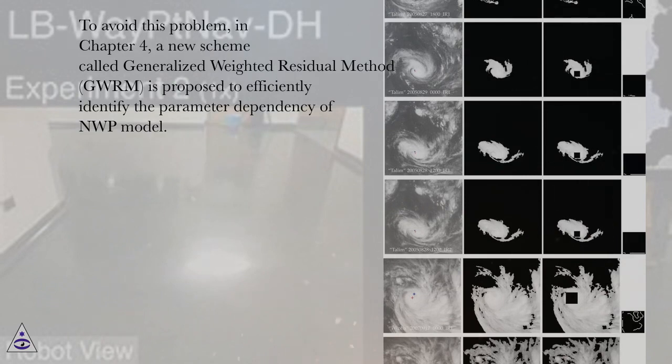To avoid this problem, in Chapter 4, a new scheme called Generalized Weighted Residual Method, GWRM, is proposed to efficiently identify the parameter dependency of NWP model.